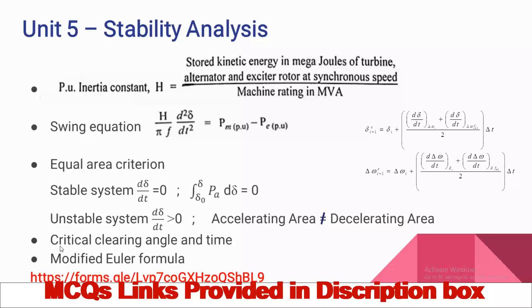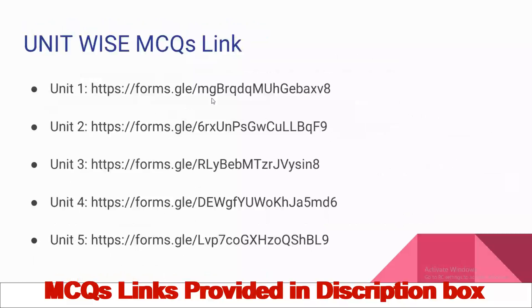Critical clearing angle and critical clearing time are important indicators for transient stability — the maximum transient stability limit is obtained using these values. The modified Euler's formula is also important and may appear in multiple choice questions. These are the unit-wise links; click the links in the description box to practice the multiple choice questions.